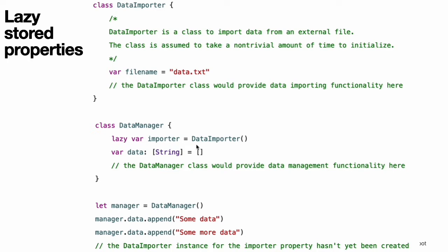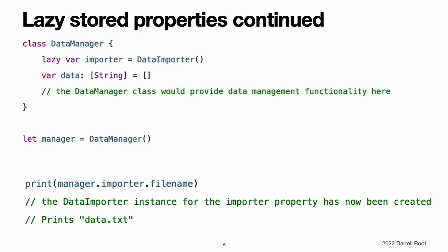A DataImporter instance needs to open a file and read its contents into memory when initialized. Because it is possible for a DataManager instance to manage its data without ever importing data from a file, DataManager does not create a new DataImporter instance when created. Instead, it makes more sense to create the DataImporter instance if and when it is first used. Because it is marked with the lazy modifier, the DataImporter instance is only created when the importer property is first accessed, such as when its fileName property is queried.